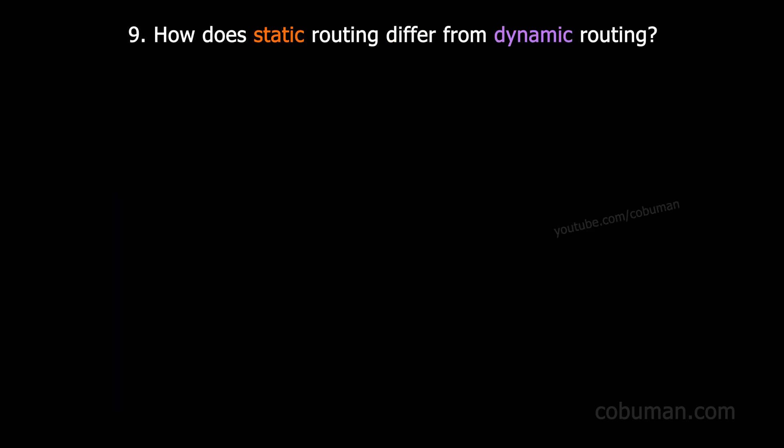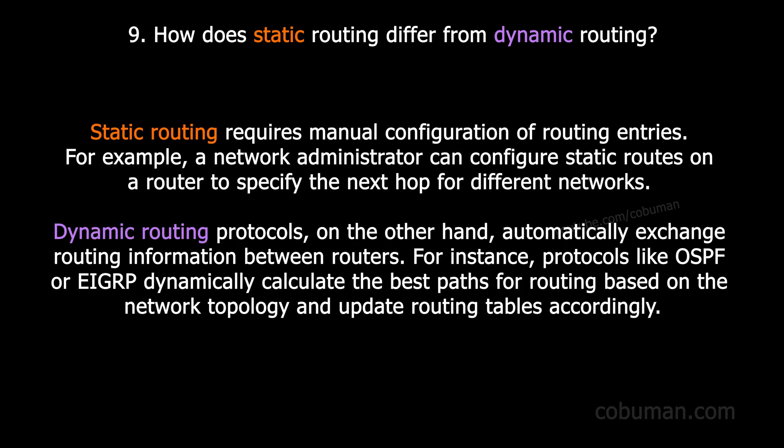Question number nine: how does static routing differ from dynamic routing? Static routing requires manual configuration of routing entries — for example, a network administrator can configure static routes on a router to specify the next hop for different networks. Dynamic routing protocols, on the other hand, automatically exchange routing information between routers. Protocols like OSPF or EIGRP dynamically calculate the best paths based on network topology and update routing tables accordingly.